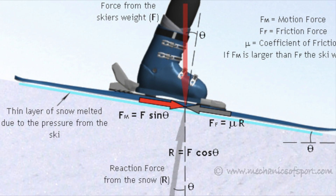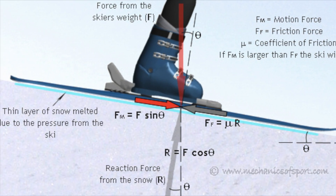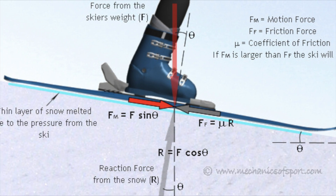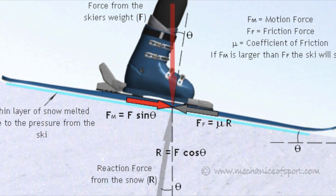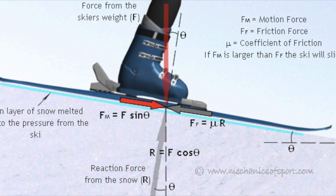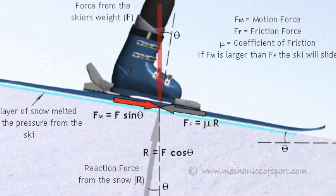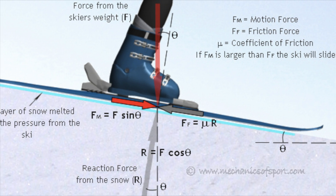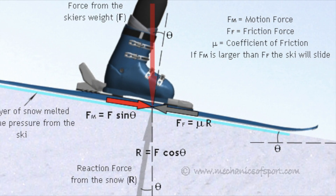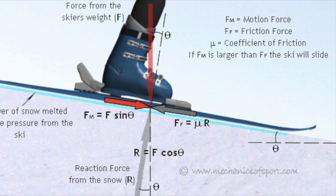However, skiing on a slope is different, as the reaction force in the snow R is at a different angle to the force of the skier's weight. There is a component of the force created by our weight in the direction of the slope, represented as Fm. The friction force Ffm is calculated by multiplying the coefficient of friction by the reaction force from the snow.